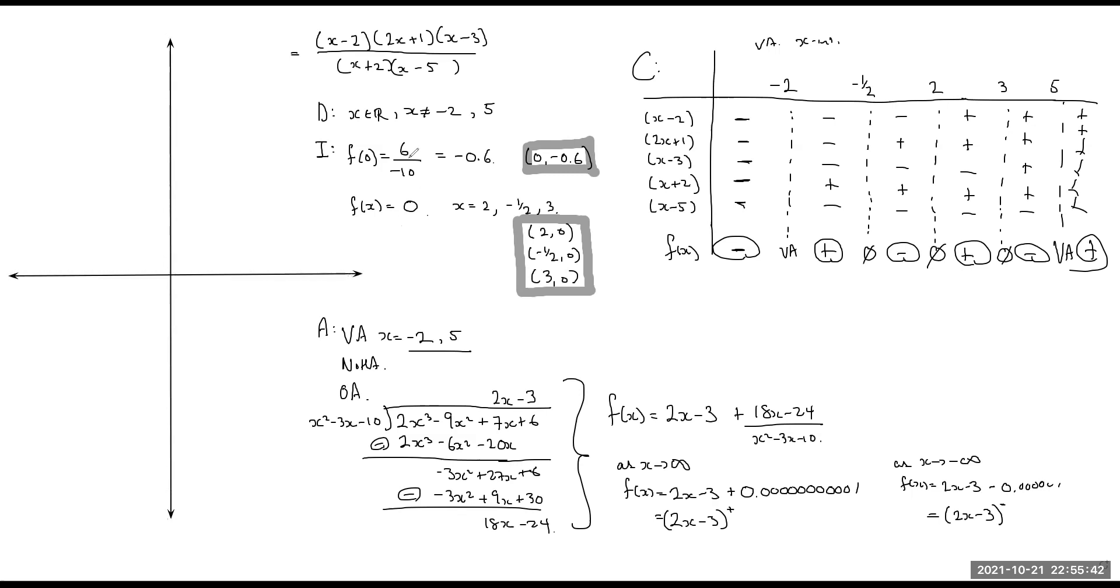Let's go. What do we know? The vertical asymptote is negative 2 with positive 5. It's a negative 2. That's a positive 5. My x-intercepts are 2, 3, and negative half. That's a lot. What else? Oblique asymptote, 2x minus 3.